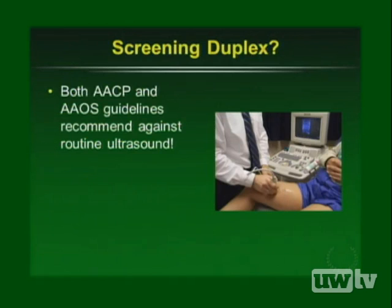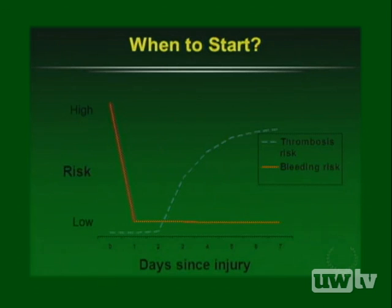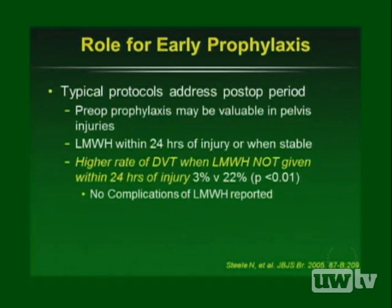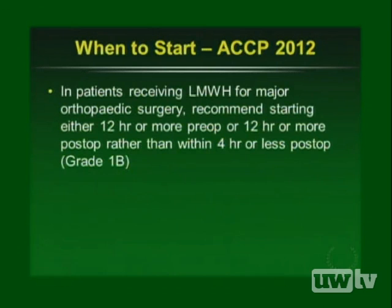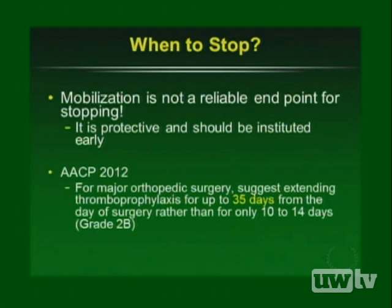Regarding timing of prophylaxis: the bleeding risk is highest in the first 24 hours, while blood clots typically develop within two to three days, creating a window to initiate prophylaxis. Good literature from 2005 supports that DVTs were significantly decreased when low molecular weight heparin was given within the first 24 hours of injury. The CHEST physicians recommend starting either 12 hours pre-op or post-op, but not within 4 hours.